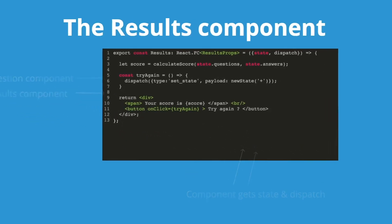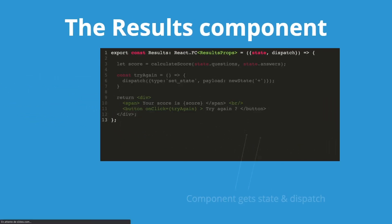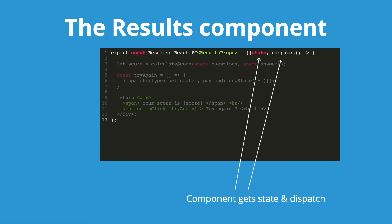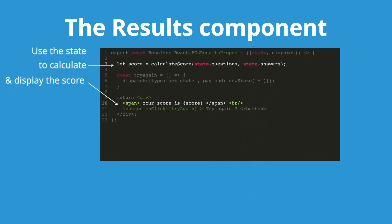Now let's have a look at the results component. As we can see, the state and the dispatch are being passed as parameters. What we do is calculate the score by comparing the questions and the answers and finding which of the questions have been correctly answered.